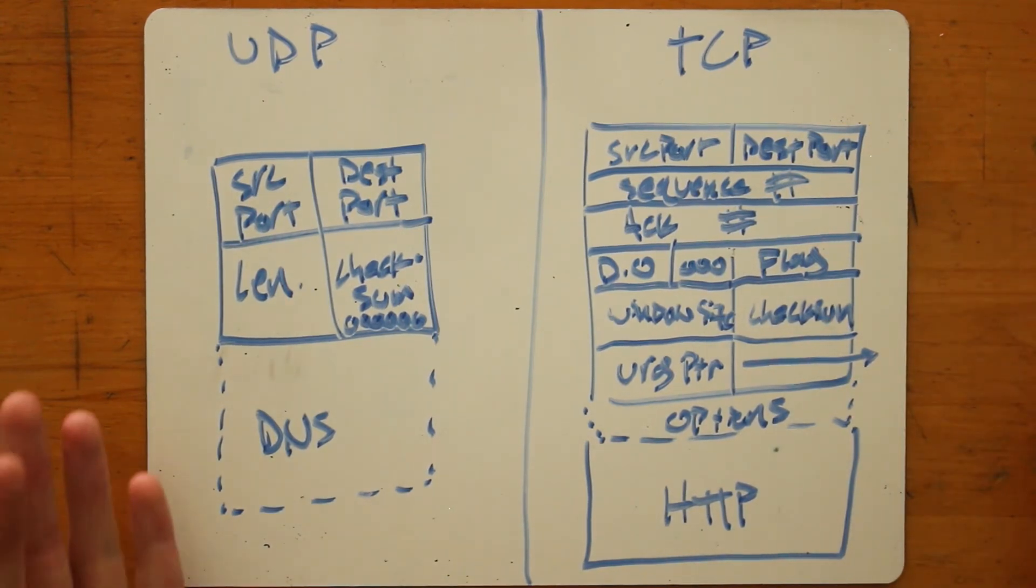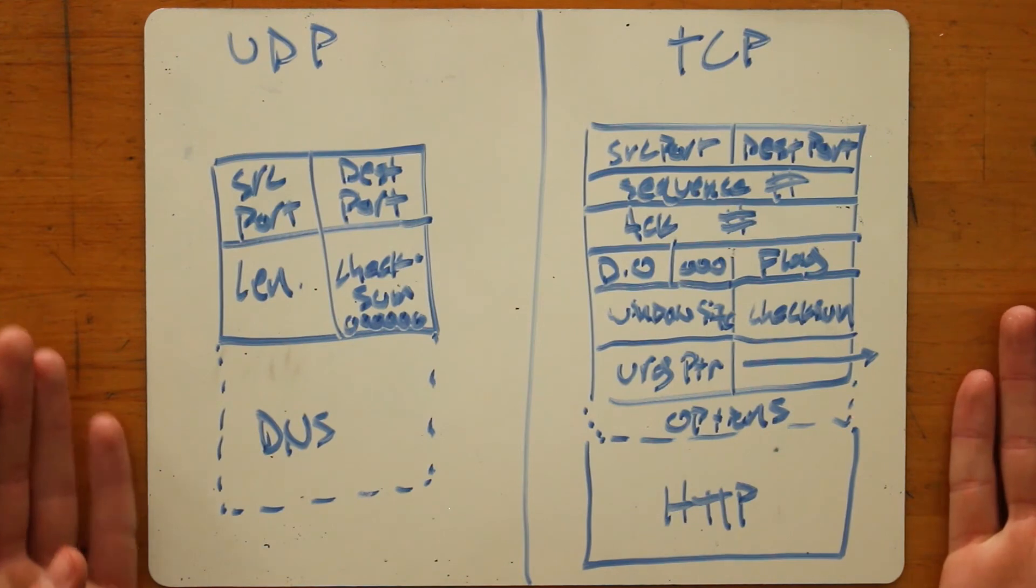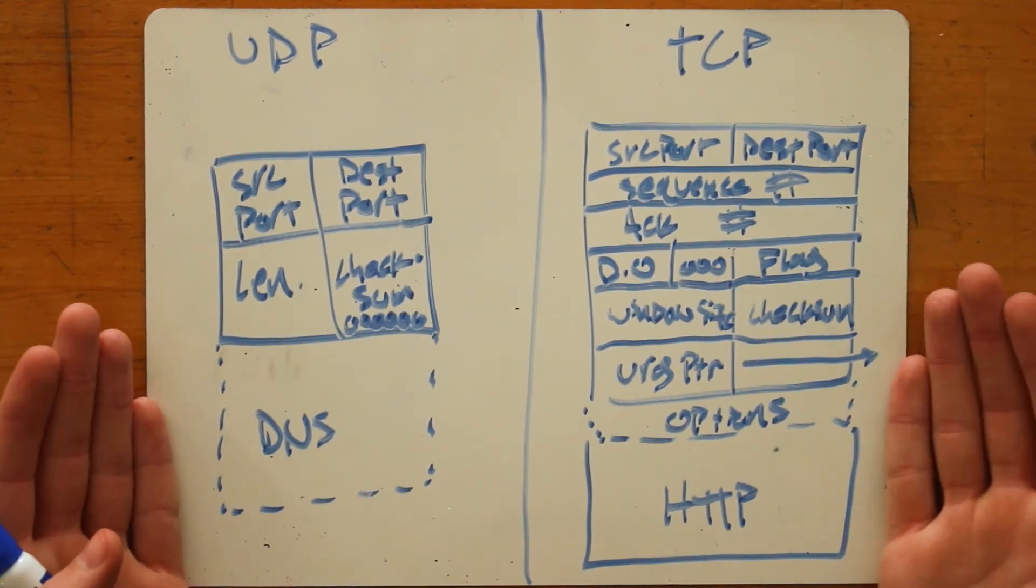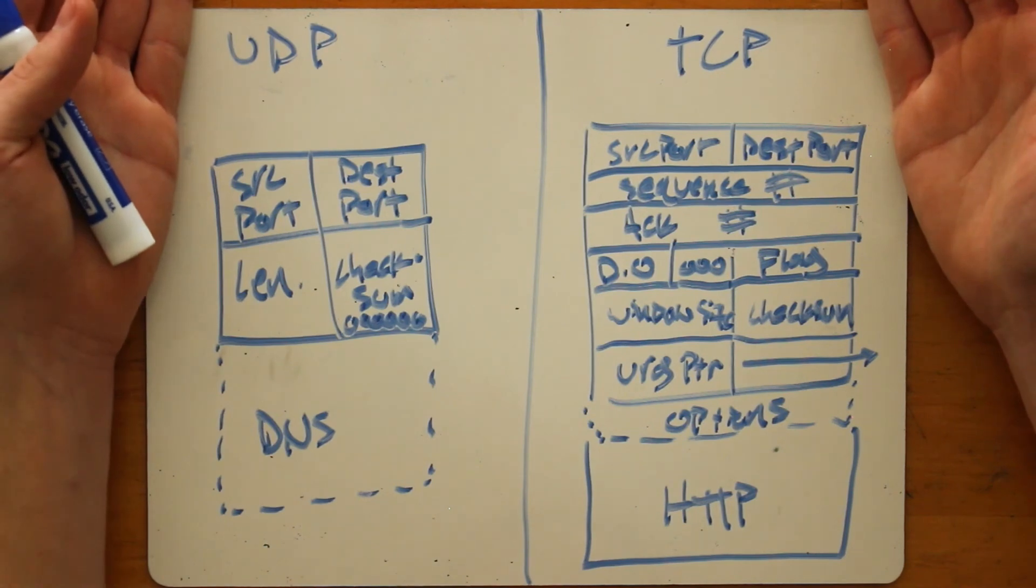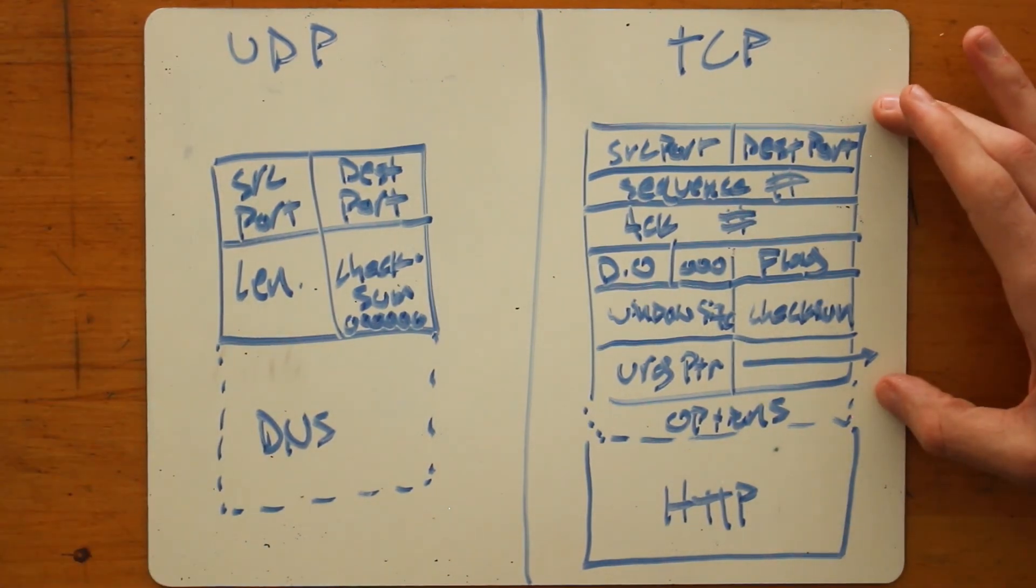So UDP and TCP are very different protocols. These are the two most popular transport layer protocols that use the IP stack. And because TCP provides a lot of services and UDP doesn't provide a lot of services, the TCP header has to be a lot bigger and a lot more complex.